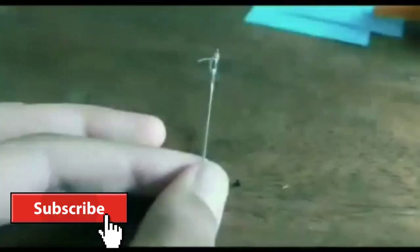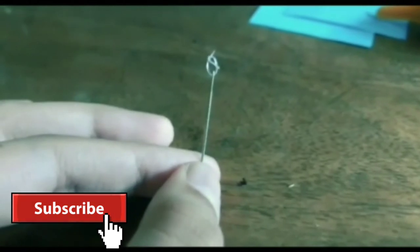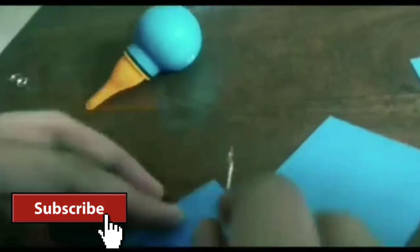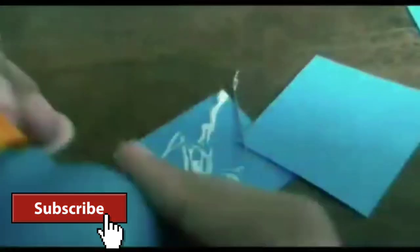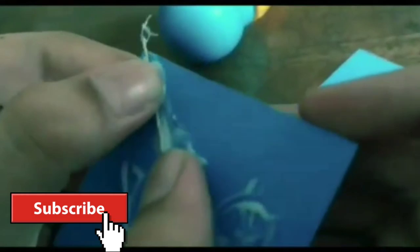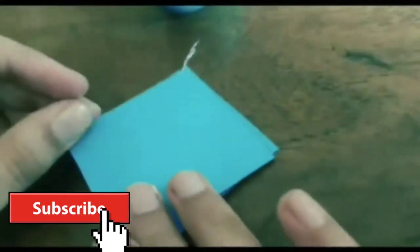Take a needle and make a loop with the help of elastic. Now paste a needle between the square sheets as shown. Allow it to dry.